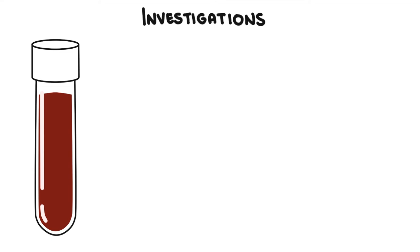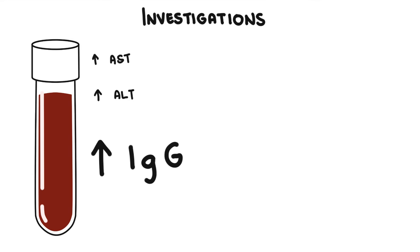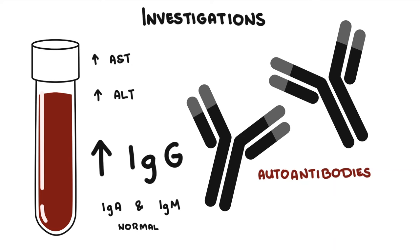People with autoimmune hepatitis will typically show elevated AST and ALT levels. They also have high immunoglobulin G (IgG) levels, with typically normal immunoglobulin A and immunoglobulin M. Most importantly, people with autoimmune hepatitis have the presence of autoantibodies.